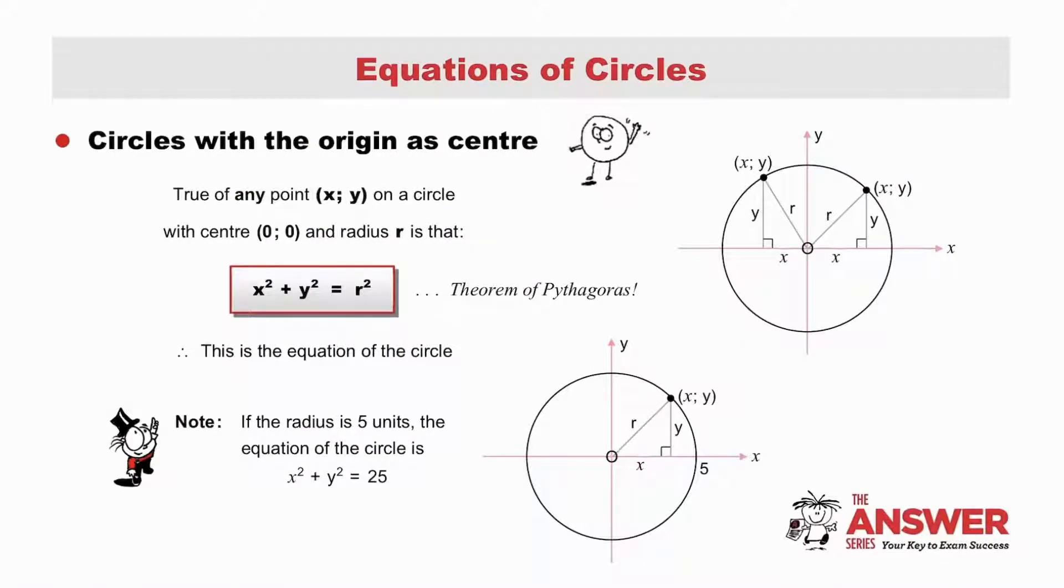Equations of circles. The fundamental concept here is, the equation of a graph is a statement which is true for all points on the graph. Let's first consider circles with the origin as centre. See the sketch alongside, where a point could be placed anywhere on the circumference of the circle.